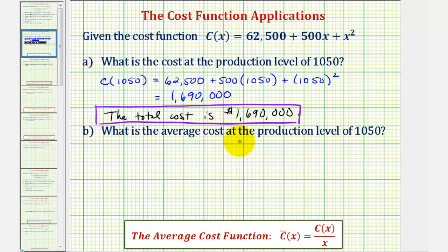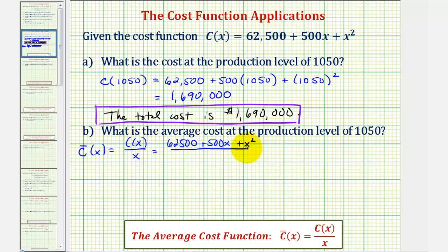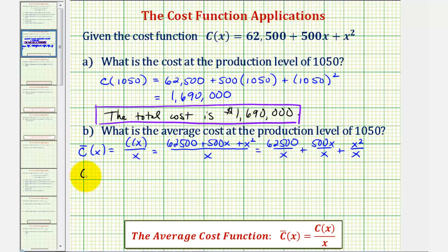Part B: what is the average cost at the production level of 1,050? The average cost function is equal to the total cost function divided by the production level, or c of x divided by x. Dividing each term in the numerator by the denominator gives us 62,500 divided by x plus 500 plus x.